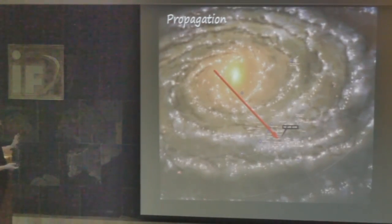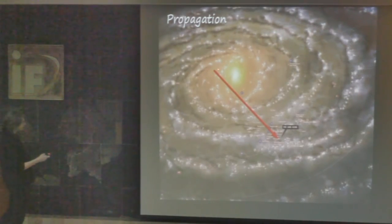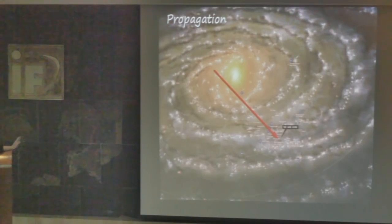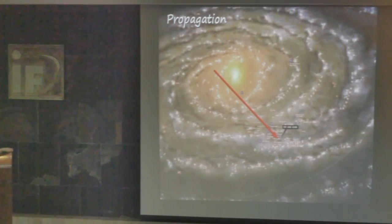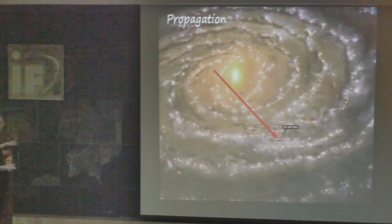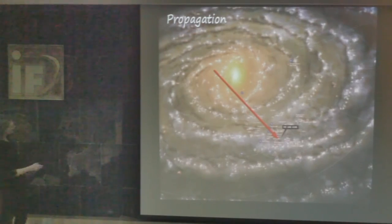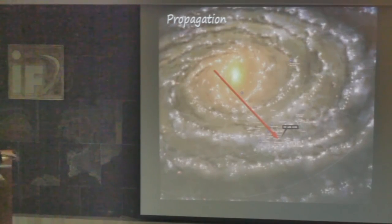For propagation, it is very simple: gamma rays propagate in straight lines from the production point to the Earth. For gamma rays with energies of 1 TeV, 10 TeV, 100 TeV, absorption is quite negligible inside the galaxy. Absorption can be important for photons with energies of 100 TeV or 1 PeV, but for this energy range propagation is simply a straight line from production to detection without significant energy loss.